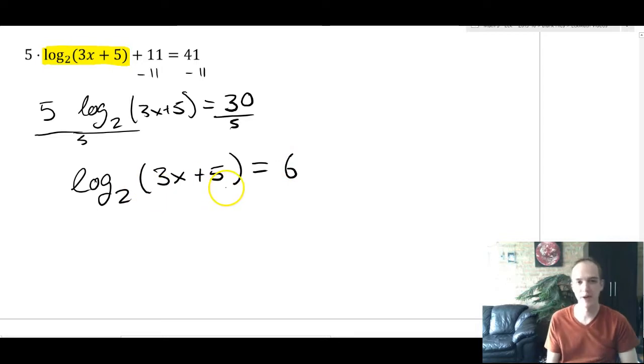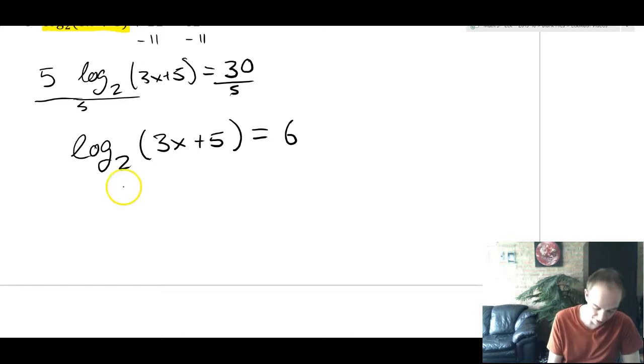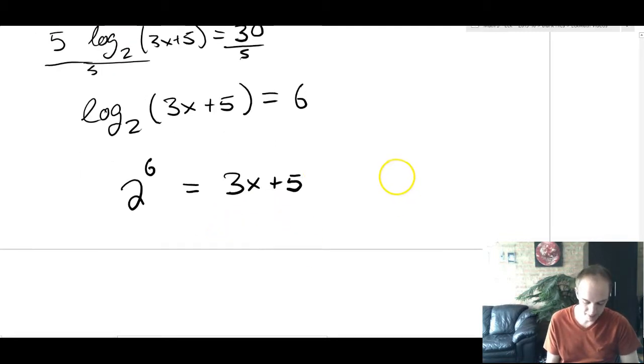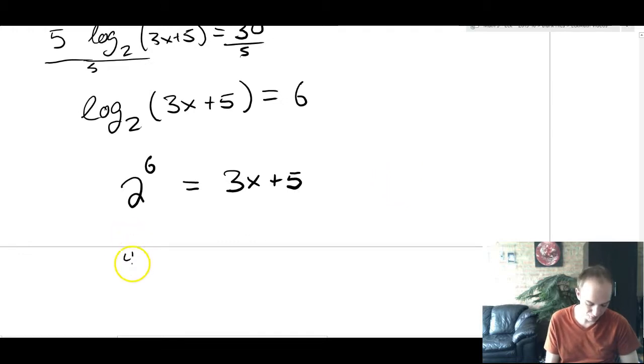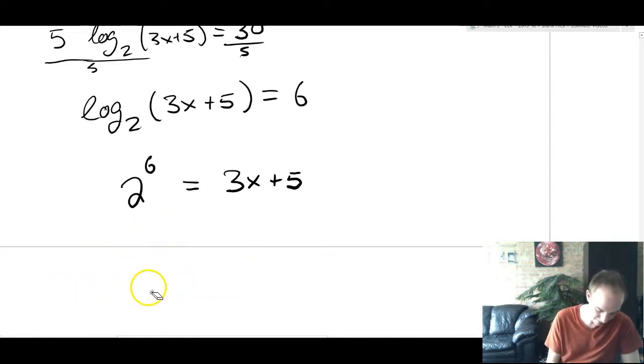And so we get as a result that the log base 2 of (3x + 5) = 6. This is much nicer than the other one because we're going to convert it. When we convert it to exponential form, it's going to look like this. 2^6 = 3x + 5. 2^6 is the same as 4^3, which is the same as 16 times 4, which is the same as 64.